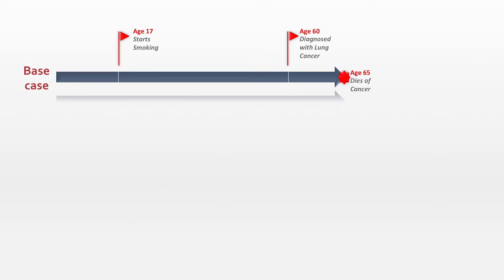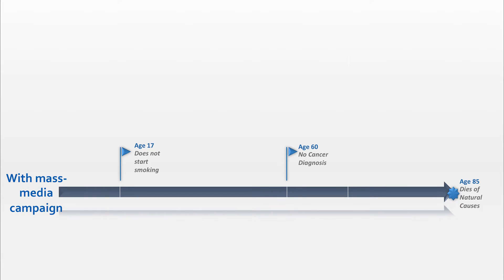The model works by cycling through the lifespan of each individual twice. The first time, the model describes the world as it exists — this is called the base case. The second time, the model changes in only one way, to include the intervention. The same people go through their lives, but this time they are exposed to the intervention, such as a mass media campaign to quit smoking.